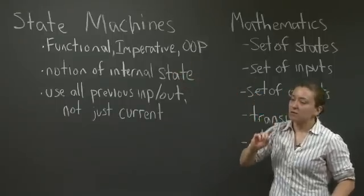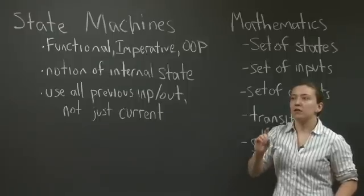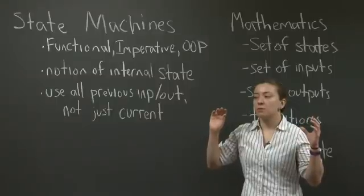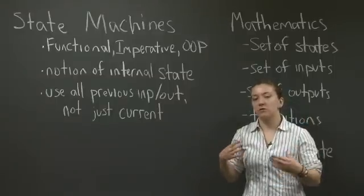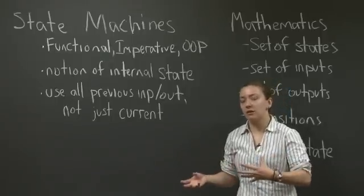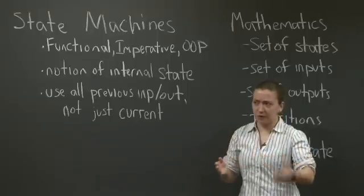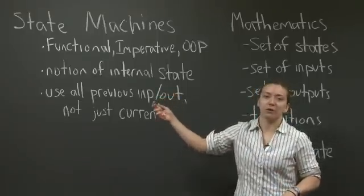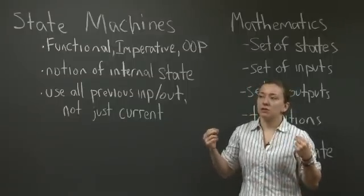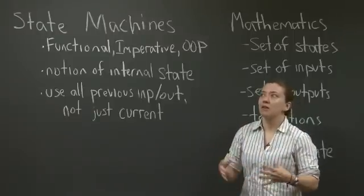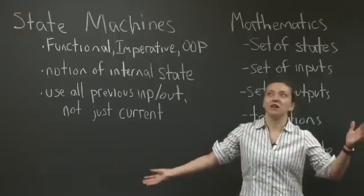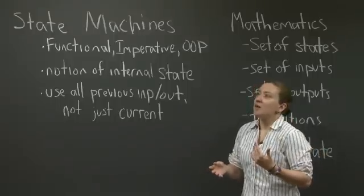But the one thing that none of these languages on their own allow us to do is keep a notion of internal state. And what I mean by that is that if we have a system that we want to model in terms of the passage of time, or keep track of the evolution of that system, or keep track of some of the data that has accumulated over time in that system, then we certainly can't do it with functional programming, right? Functional programming takes one input, generates one output, and you could generate a list of code that took in every possible situation, and then generated the logical output. But that would be a lot of code.